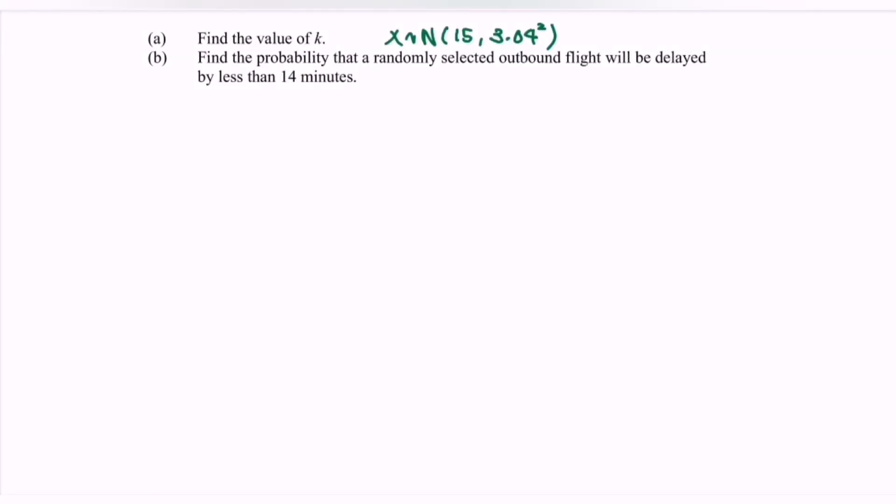Now refer to question B: find the probability that a randomly selected outbound flight will be delayed by less than 14 minutes. So we have P(X < 14). Step number one, standardize the situation. So we have z less than (14 minus 15 over 3.04).